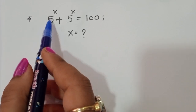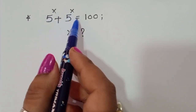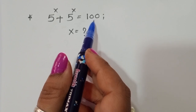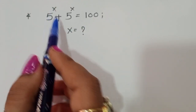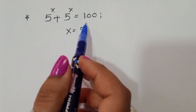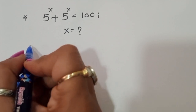The question is: given 5^x plus 5^x is equal to 100, we have to find out the value of x. Let's see the solution.